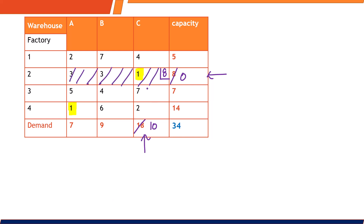Factory 2 can supply only 8 units, so no more allocation there. The next minimum cost is also 1. Start allocation here: the demand is 7 and the capacity is 14, so the minimum is 7. We allocate 7 units, fulfilling the demand for warehouse A completely — it becomes 0. Factory 4 had capacity 14, and having delivered 7, we are left with 7 units remaining.